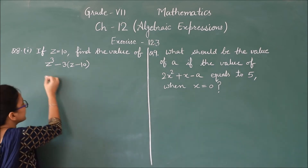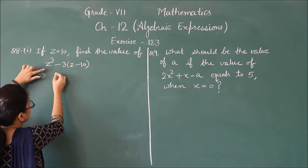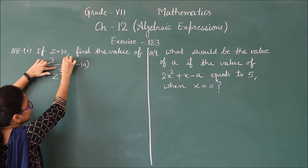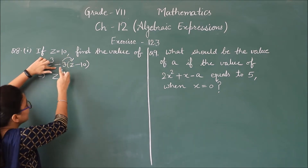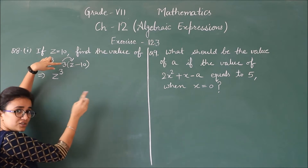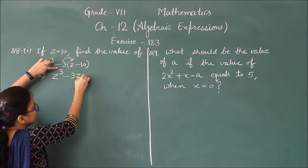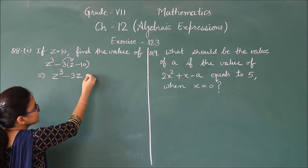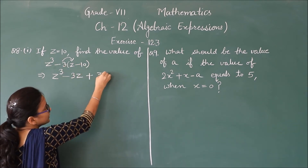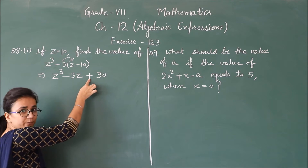The first term of this expression is z cube, as it is. Now this will be multiplied — this term is minus, and the sign of the other value will change. So minus becomes plus 3 into 10, that is 30. Because minus times minus gives plus.